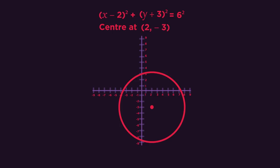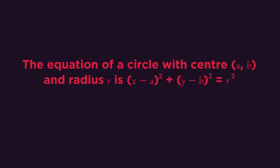Center at x equals 2 means the bracket is x minus 2, and the center at y equals minus 3 means the bracket is y plus 3. That's all there is to it.